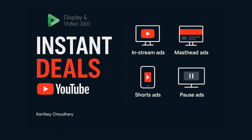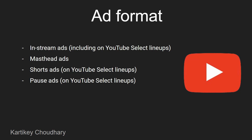We will cover in-stream ads, masthead ads, shorts ads, and pause ads, and what the basic differences are between all of these. Starting with the ad formats — in-stream ads are used for branding where content is played on YouTube as your ads. These can be skippable or non-skippable and can be of multiple lengths: 6-second, 15-second, or 30-second videos, depending on the format and audience you are targeting. You can also do cross-device targeting.